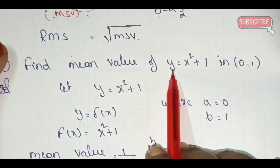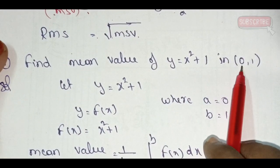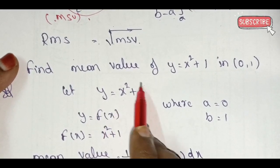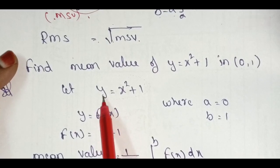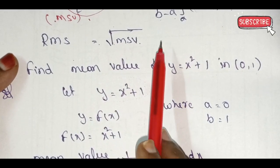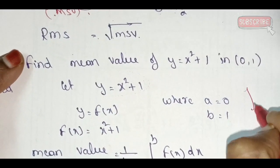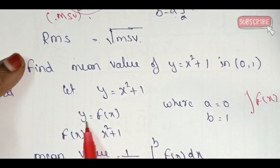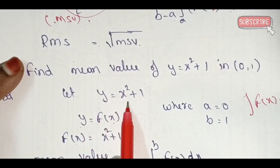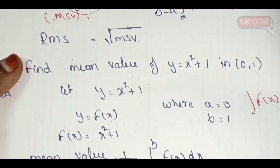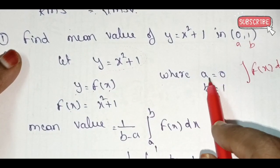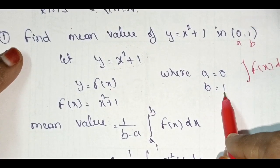Find the mean value of y = x² + x in the range [0, 1]. Here y equals f(x) = x² + 1. So a equals 0 and b equals 1.